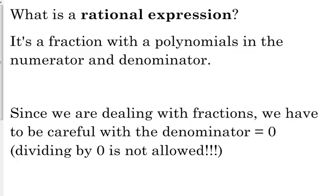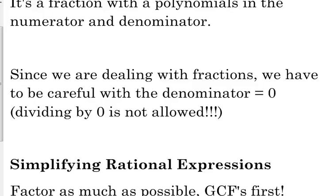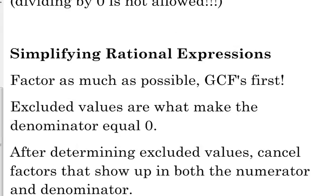We are dealing with fractions, so we have to be very careful if something causes our denominator to be zero, because we are not allowed to divide by zero — that's undefined. We'll deal with that in a minute. When simplifying rational expressions, we'll factor as much as we possibly can. Anytime we're dealing with fractions, we want to look for the GCF first, take that out if possible, and then go from there with any other type of factoring we've learned.